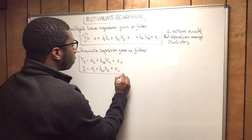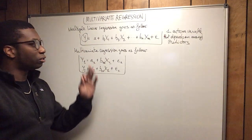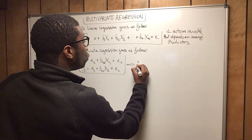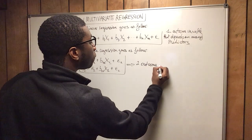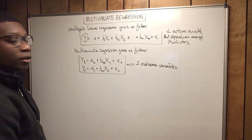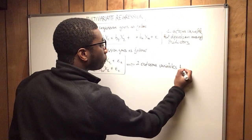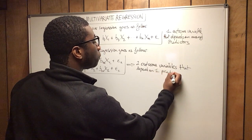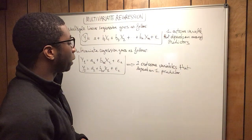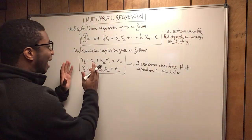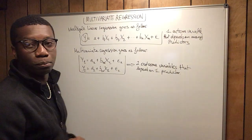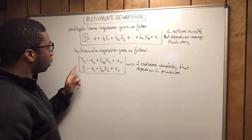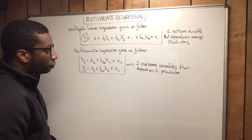This is a typical multivariate regression. As you can see, there is a substantial difference between the two. In the multivariate regression you have two outcome variables. You have two outcome variables that depend on one predictor. Of course, it doesn't mean it has to depend on only one predictor — it could depend on many predictors. But the point is that you must have at least two outcome variables. That is what multivariate regression is.